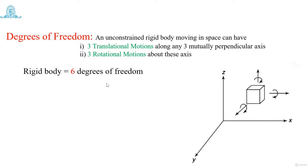The minimum number of motions a body can have so that you can specify its position in a space or in a system — that can be considered as degrees of freedom.